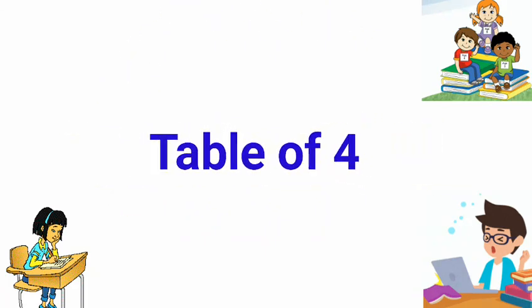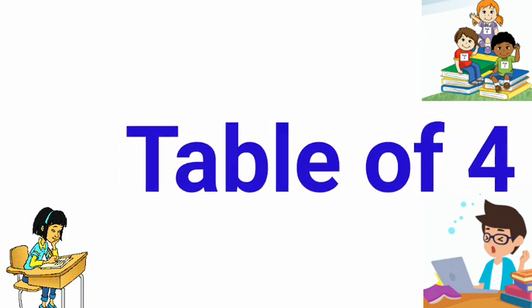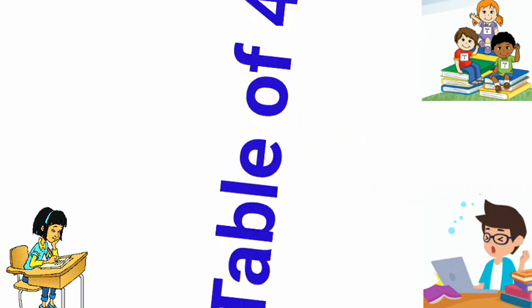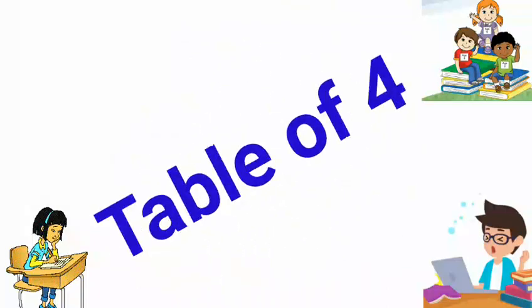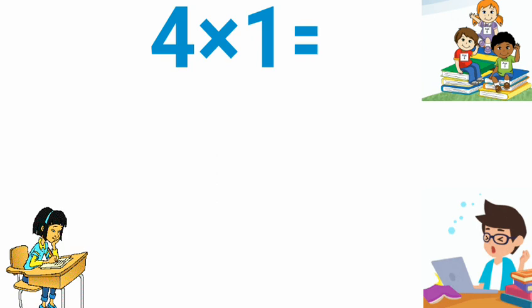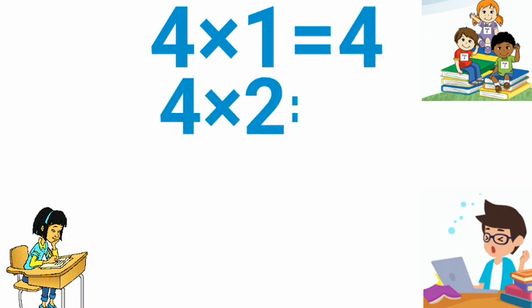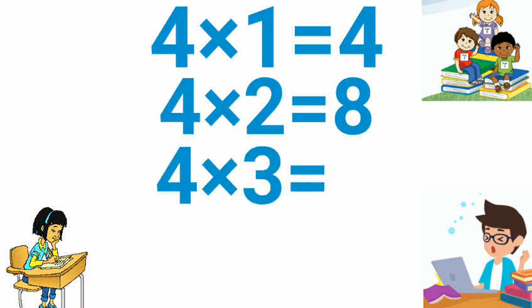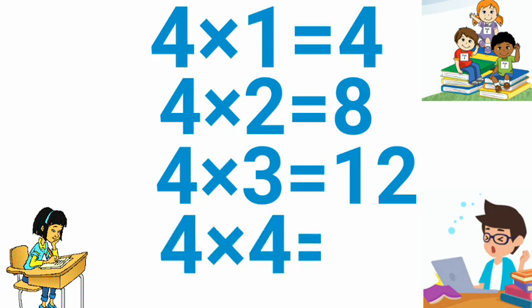Table of 4. Let's start the table of 4. 4 1 is 4, 4 2 is 8, 4 3 is 12, 4 4 is 16.